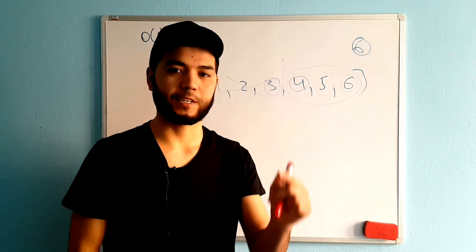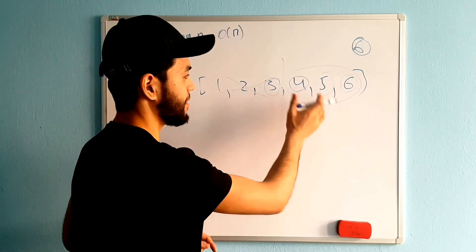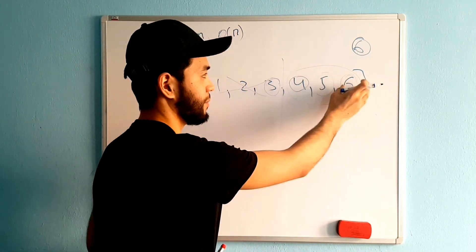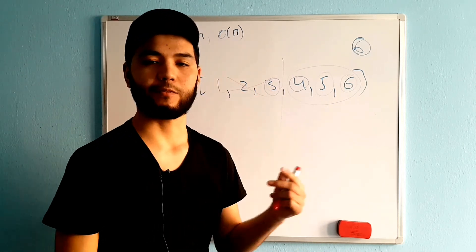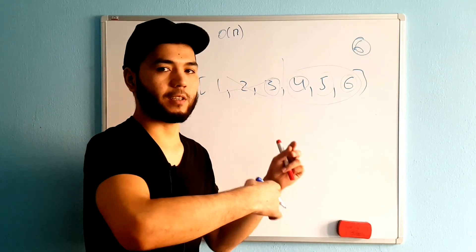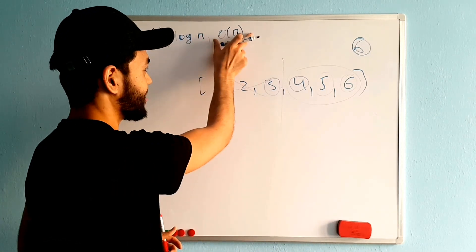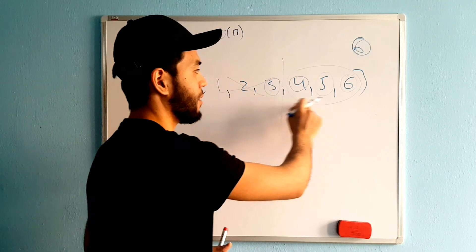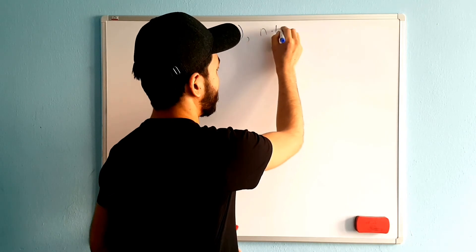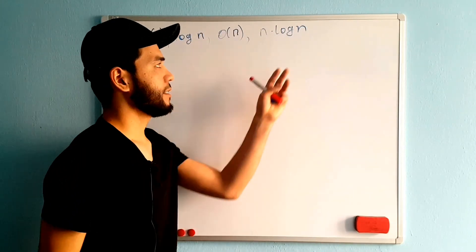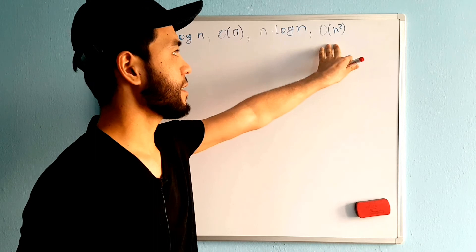Iterating an entire list — looking at every value one at a time — is O(n), linear time complexity. Dividing the array in half each time, as in binary search, gives logarithmic time complexity, which is faster than linear. When you have a million numbers, you quickly find the target by repeatedly halving. The next type is O(n log n), linear-logarithmic time complexity. One of the best examples for this is merge sort.